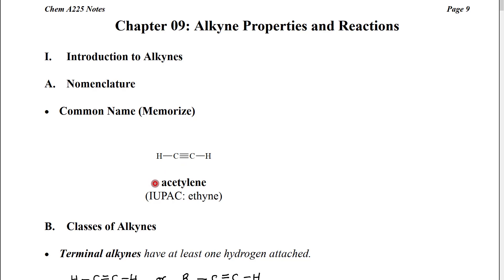The common name for this is acetylene. It's a very commonly used industrial chemical, and so you're very likely to encounter this name. The IUPAC name for this would be ethyne, 2-carbon alkyne.